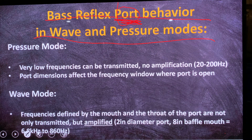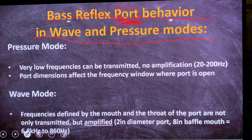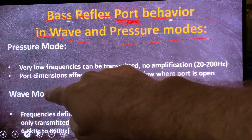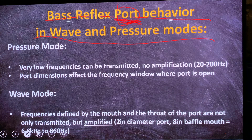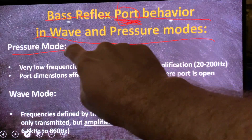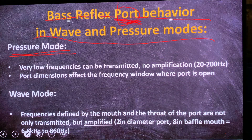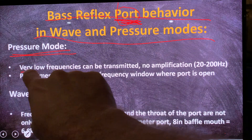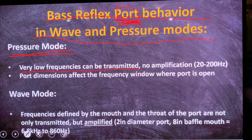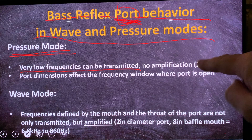Basically, the port in a loudspeaker cabinet operates in both pressure mode and wave mode. The function it fulfills in pressure mode is the primary function, and the result of this pressure mode operation is that very low frequencies can be transmitted through this port into your room.